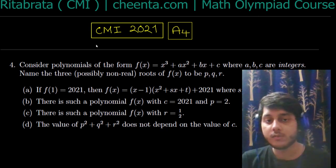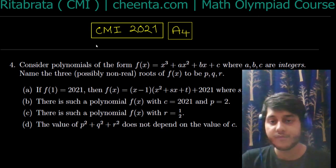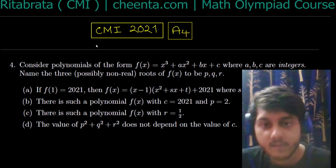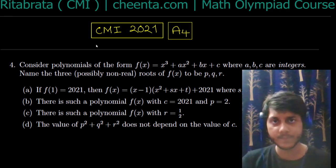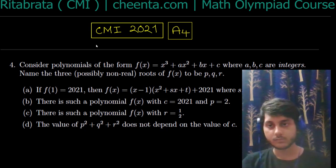We also determine whether there is a polynomial such that c = 2021 and one of the roots is 2. We have to determine if there's a polynomial where one of the roots is 1/2, and whether the sum of square of roots p² + q² + r² depends on c or not.